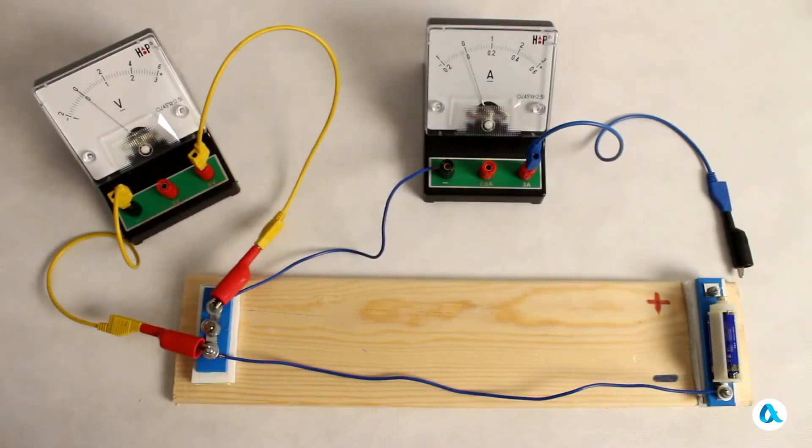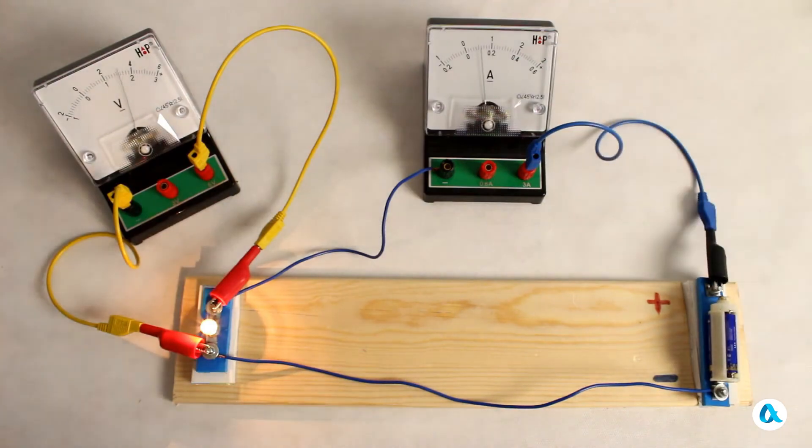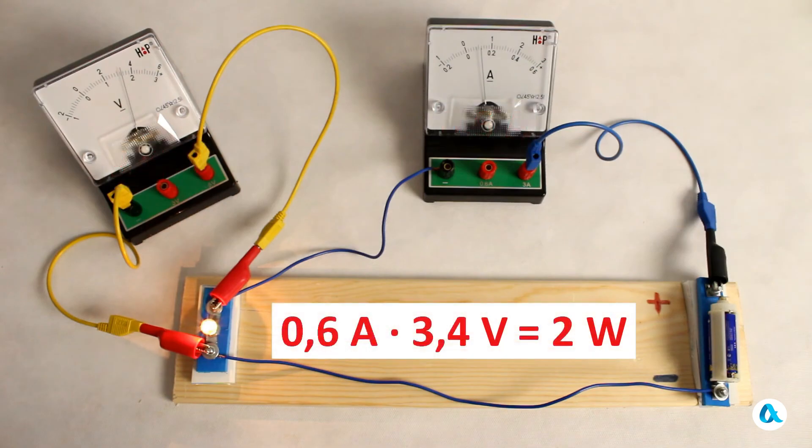Here, the ammeter is connected in series with the light bulb and the voltmeter is connected in parallel. We close the circuit and a current of 0.6 amperes flows through it. While the voltmeter shows 3.4 volts, this is the voltage drop across the light bulb. And if we multiply 0.6 amperes by 3.4 volts, we get the power dissipated in the light bulb, which is about 2 watts.